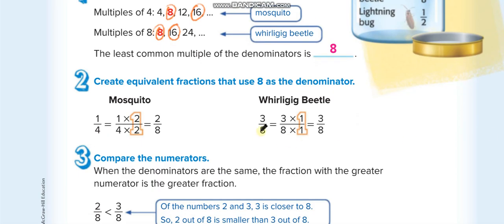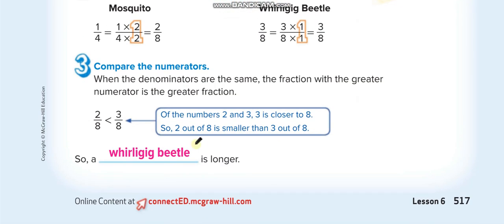3 over 8 is already 8. To make 1 over 4 have a denominator of 8, we multiply the fraction by 2 — both numerator and denominator. So 1 over 4 times 2 over 2 equals 2 over 8. Since 2 is less than 3, we know 2 over 8 is less than 3 over 8.